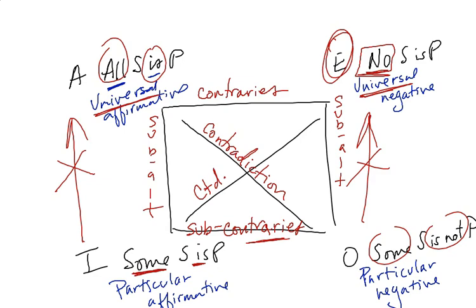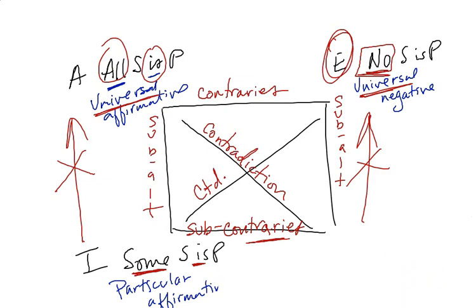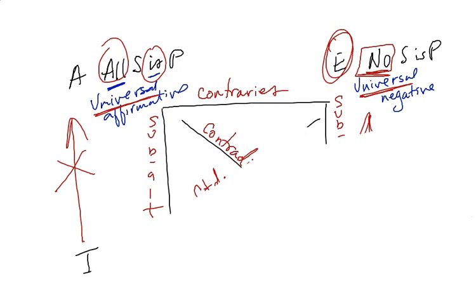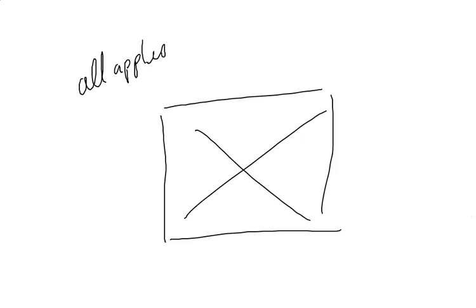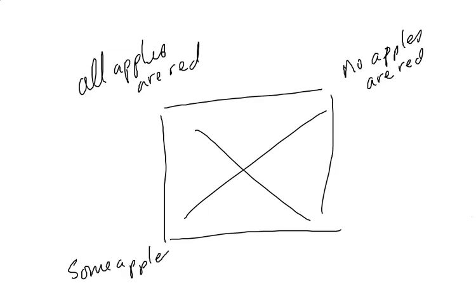Now it looks very messy on my screen, so I'm going to take this off. Let's clean it off a little, and what we're going to do is make a nice new square. And we're going to do with the apples again. Just as some review, let's do a new square. I would encourage you to do this in your notes. And we're going to have all apples are red here. No apples are red here. Some apples are red here. Some apples are not red here.